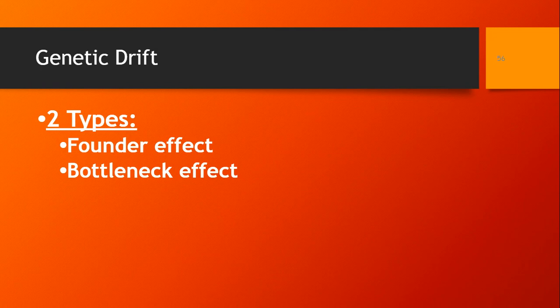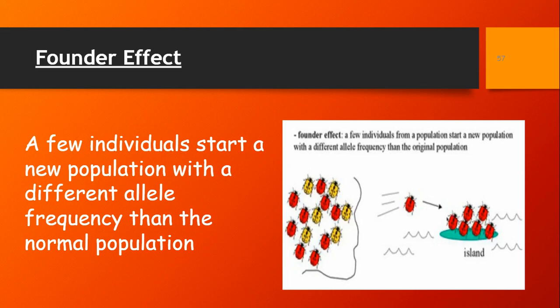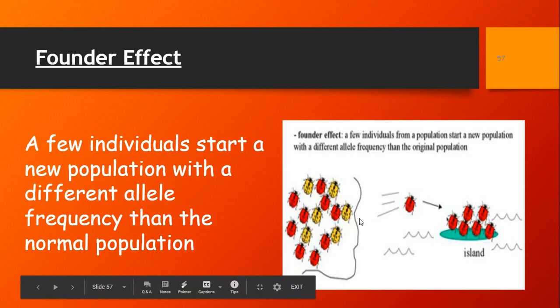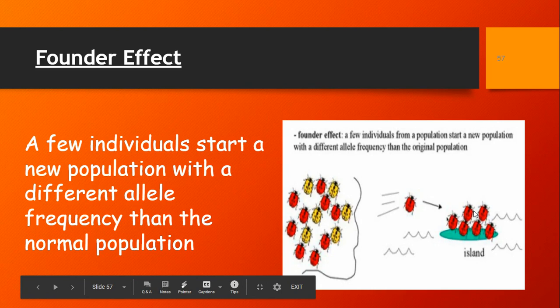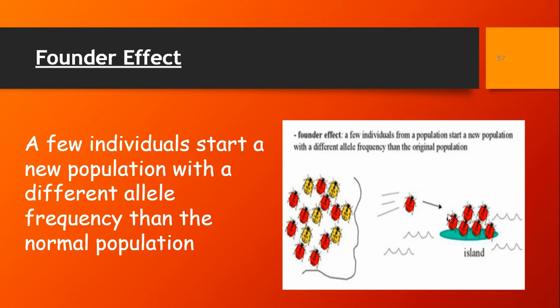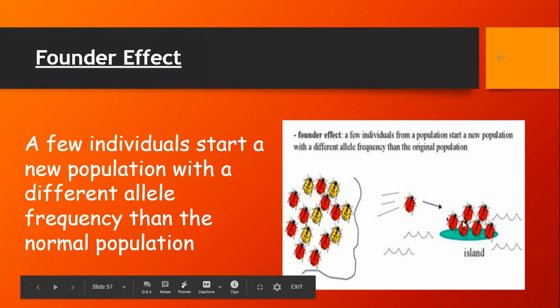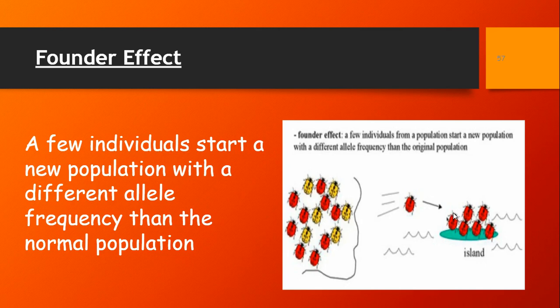There are two types: founder's effect and the bottleneck effect. Founder's effect is when a few individuals start a new population somewhere else, often seen on islands. For example, on the mainland we have bugs that are red and yellow, but a few get blown away in a storm and land on an island — and they just happen to all be red, purely by chance. So all the bugs on the island become red, while the mainland remains evenly red and yellow. That's genetic drift through the founder's effect.